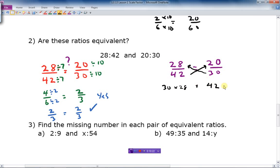So I do 30 times 28 and 42 times 20. If I do that, what do I get? I get 840 over here and I get 840 over here. And yes, they are equivalent, because those two numbers are equivalent. So I can do it either way. I can make them fractions and reduce them to lowest terms, or I can just cross-multiply and see if I get the same number. Whatever works for you.